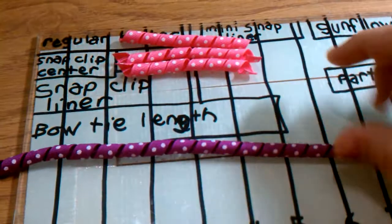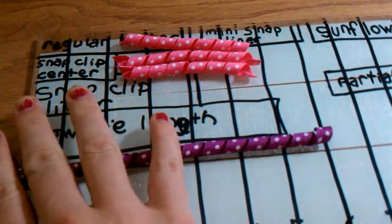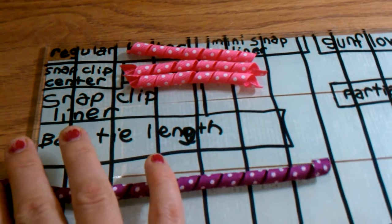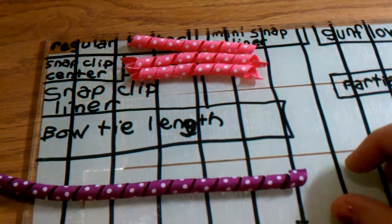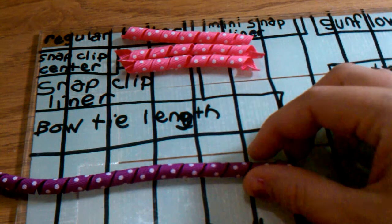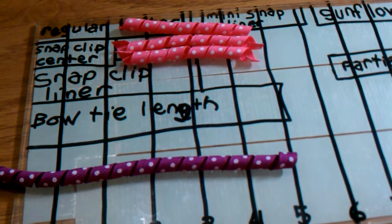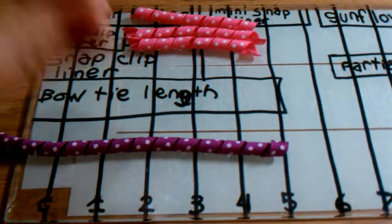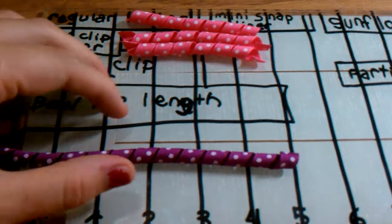Now the way I do it is I first count the number of loops I'm going to cut. For a three and a half inch corker, I'm going to count the number of loops that I have in a three inch span for corkers.